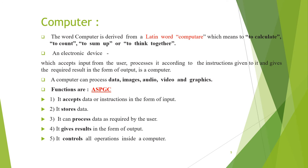A computer is an electronic device — it works on electricity, without which it doesn't work. The word computer is derived from a Latin word meaning to calculate, to count, to sum up, or to think together. A computer includes three different processes: input, process, and output. Input is the information entered by the user, for example by typing from the keyboard.